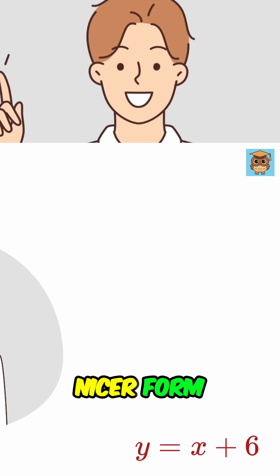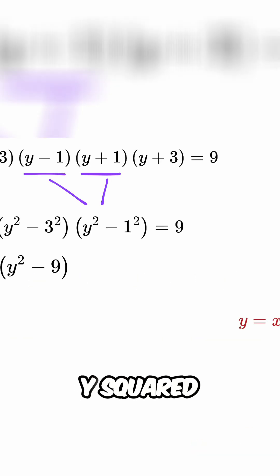We can again reduce it into a nicer form. So, now we have y squared minus 9 times y squared minus 1 equals 9.